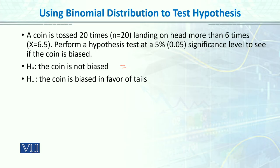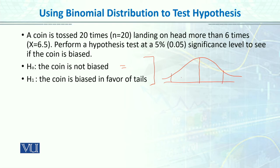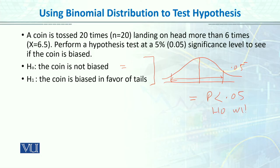Because we said tails are coming up more often. Similarly, in research we form a null hypothesis and an alternative hypothesis, and to test these we apply a statistical test — it could be a z-test, a t-test, or here a binomial distribution test. If the calculated p-value is less than 0.05, the null hypothesis will be rejected. If the p-value falls in the acceptance region, we will fail to reject the null hypothesis.